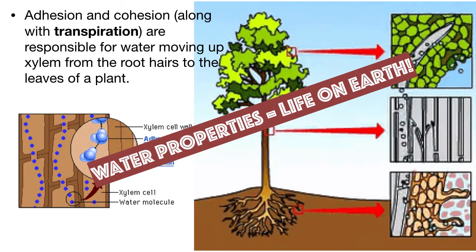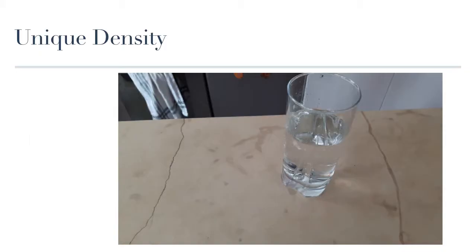And this is a great example of how without the properties of water, life on Earth could not exist. Trees and other plants are, after all, one of the main producers of nutrients and oxygen on Earth.